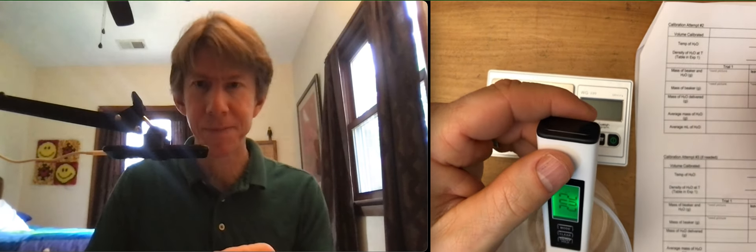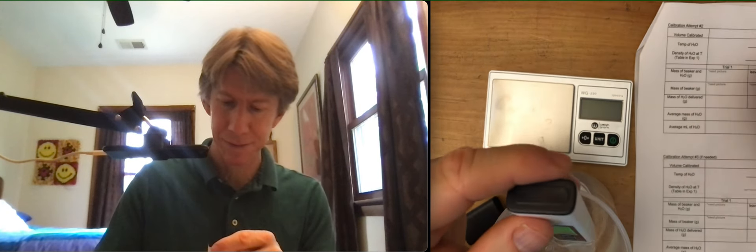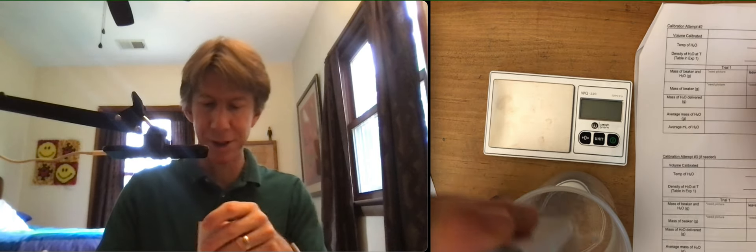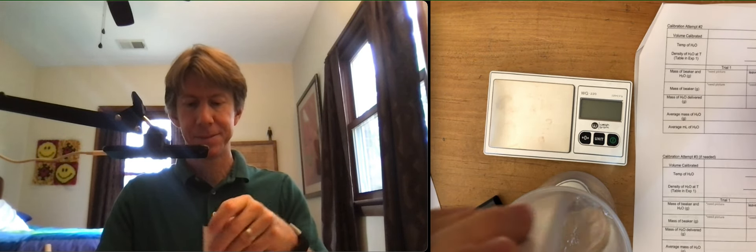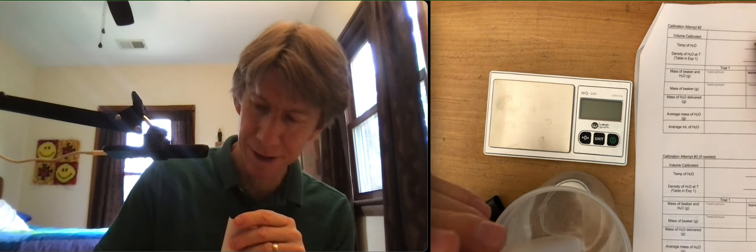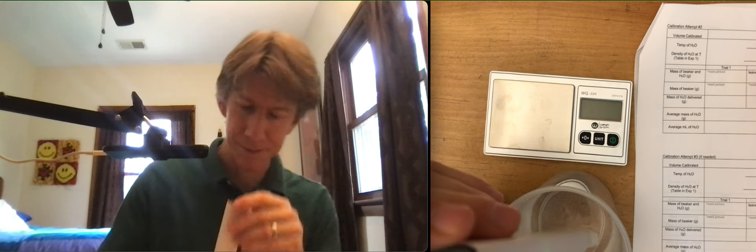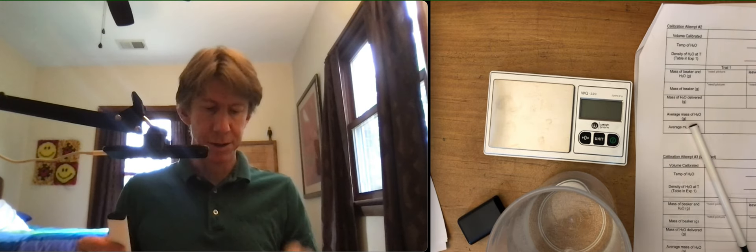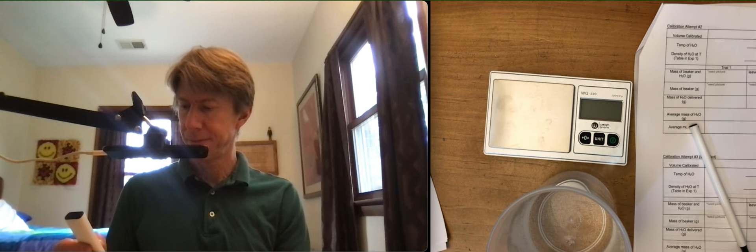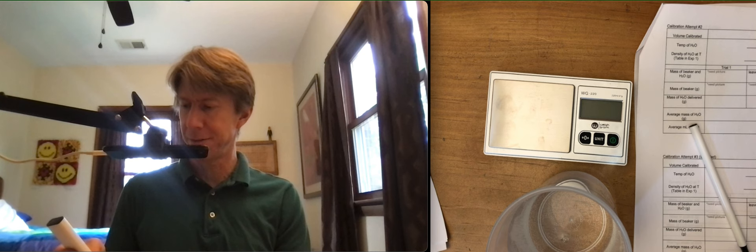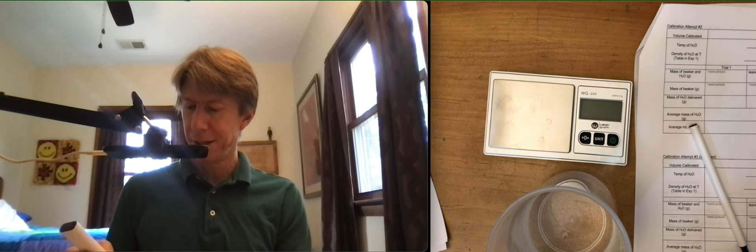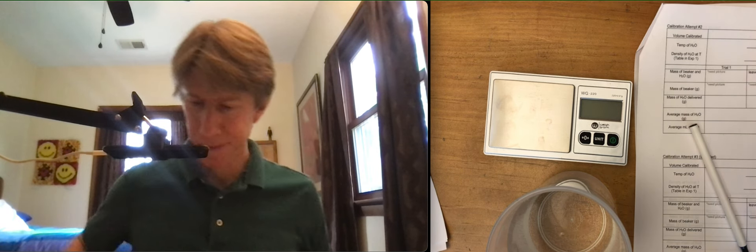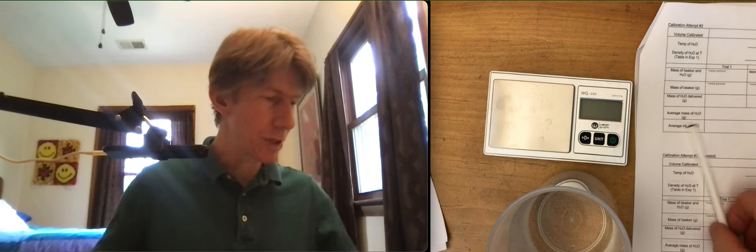But now it's going down really slowly. And when it goes down really slowly, it means that you're basically at equilibrium. Can you read that? 20.2. 20.1. 20.1 it is.